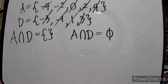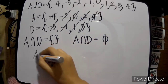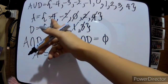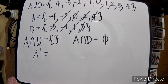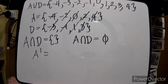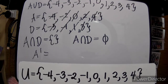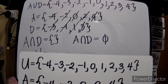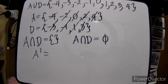Next is A complement. When we say complement, it is the remaining elements from the universal set after removing the elements of the set being complemented. Set A is {negative 4, negative 2, 0, 2, 4}, and our universal set goes from negative 4 to positive 4.